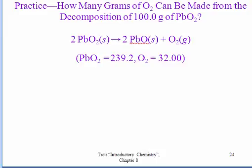So let's do a practice problem for mass-to-mass stoichiometry. How many grams of oxygen can be made from the decomposition of 100 grams of lead 4 oxide?